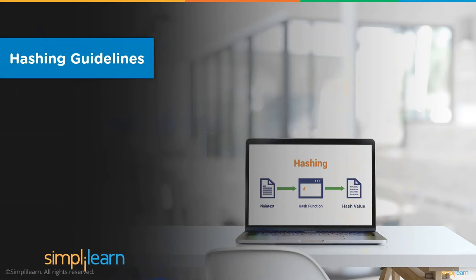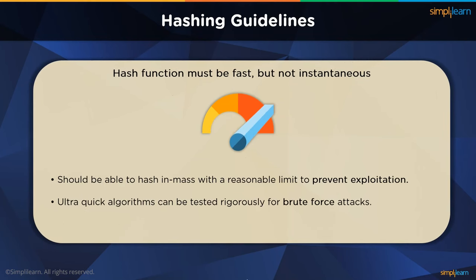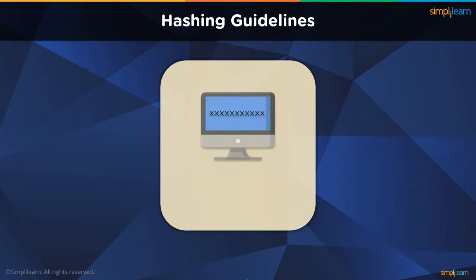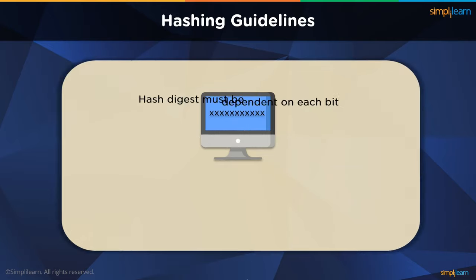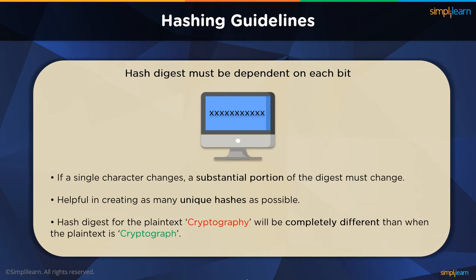There are certain requirements a hash function must meet before being accepted. The hash function must be quick enough to encrypt large amounts of data at a relatively fast pace, but it also shouldn't be too fast — running the algorithm at maximum speed makes it easy to brute force and creates a security liability. There must be a balance to handle large amounts of data without making it easy to brute force through all possible combinations. The hash function must also be dependent on each bit of the input — whether text, audio, video, or any other format. If a single character is changed, no matter how small, the entire digest must have a distinctly different hash value. This is essential to create unique digests for every password being stored.